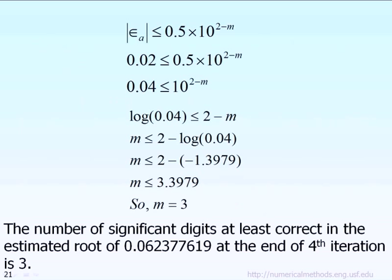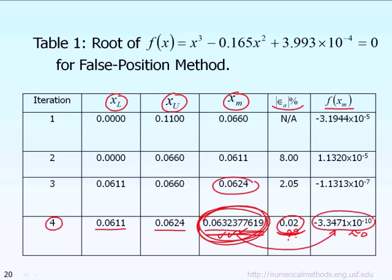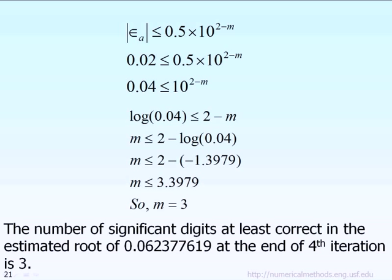Okay, assuming you got the final answer already, which basically say the relative error norm is 0.02% and the final predicted root, X of M equal to 0.0632377. The question becomes, in this answer, how many significant digits that we can trust? Well, to answer that question, in the other chapter, we already developed a formula which basically says the number of significant digits that we can trust, let's call it M, has to satisfy this inequality.